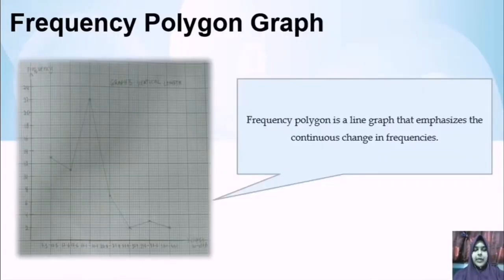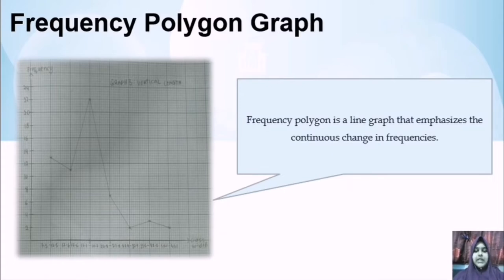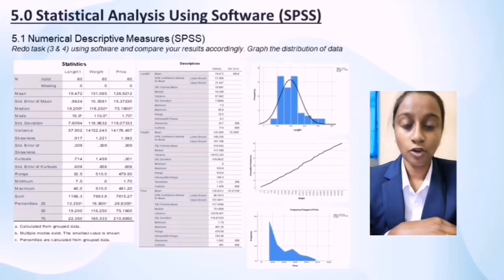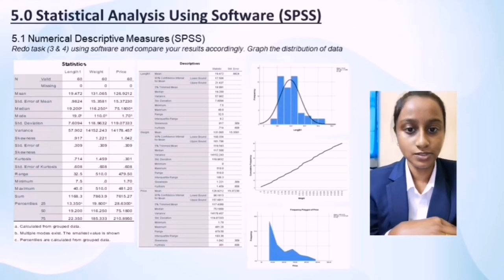The last graph is a frequency polygon graph. A frequency polygon is a line graph that emphasizes the continuous changes in frequency. This frequency polygon graph shows the vertical range. The X axis is the class width and the Y axis is the frequency. This graph shows the first class of vertical length is at 17.7 to 22.7 class width, where the frequency is 22. The lowest class of vertical length is at 27.9 to 32.9 and 38.1 to 43.1 class width — both having the same frequency of 2.